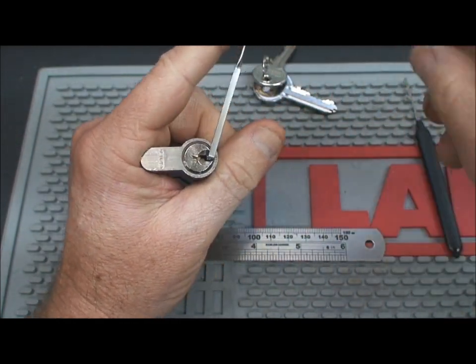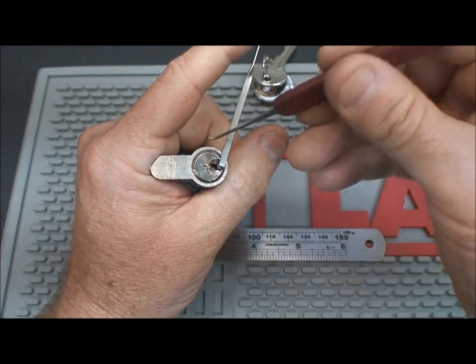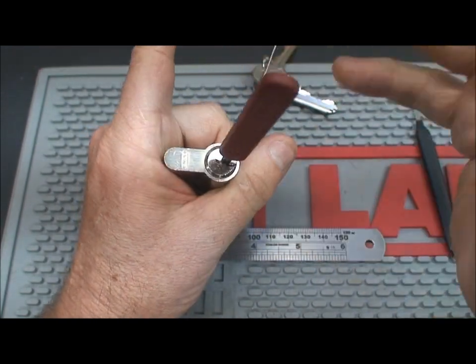The machine work is excellent. The tolerances are very tight. In fact, the biggest challenge on these Abuses is getting that false set, which we're going to try to do right now.